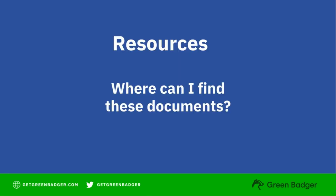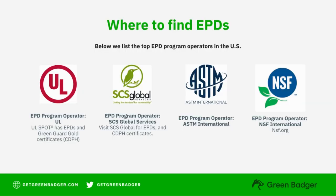Where do we find these documents? A lot of these will be provided to you by the manufacturer, but if you need more information, here are some organizations. You can find a number of environmental product declarations from ULSPOT, which also provides GreenGuard Gold certificates, and there's also SCS Global, ASTM, and NSF, all of which have websites.